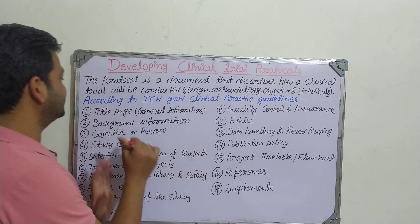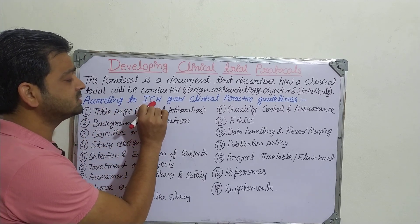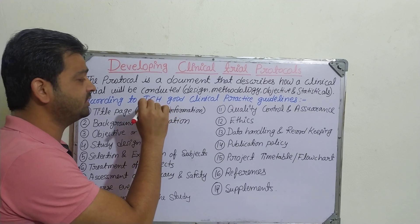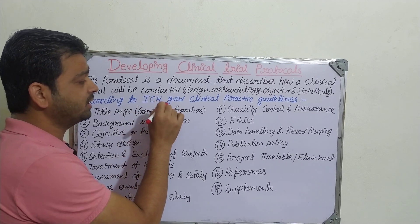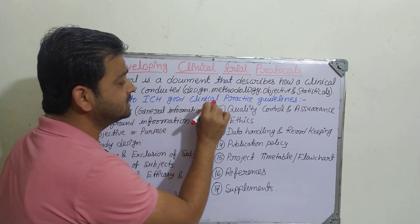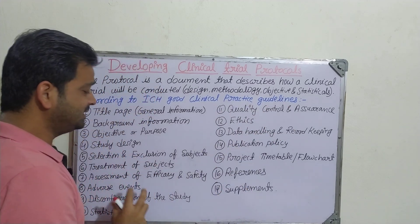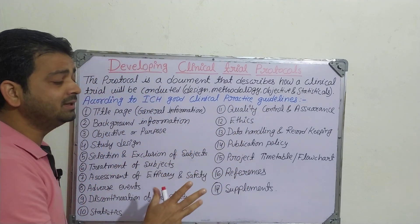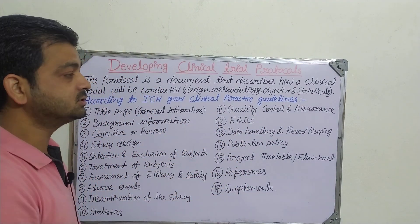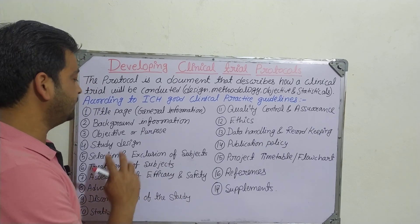the Investigational New Drug file, to the FDA so that they will go through it and give the approval. Generally, according to the ICH — International Council of Harmonization, previously called the International Conference on Harmonization — it has given the Good Clinical Practice guidelines. These are the points supposed to be revealed, or the details that should be present in the protocol.